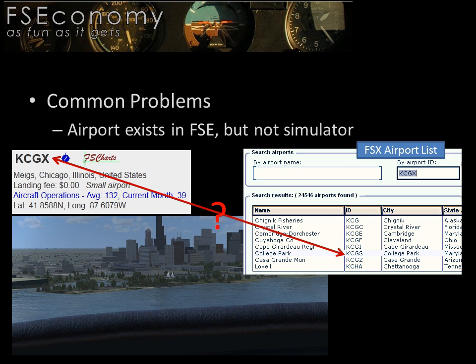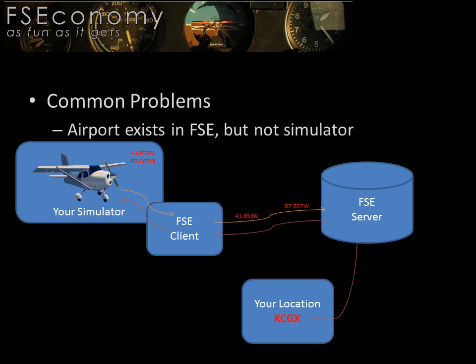For nearly 20 years, Meigs was the default startup location for the Microsoft Flight Simulator series. In 2003, Meigs Field was permanently closed down. The result is that FSX and X-Plane users do not have this field in their simulator by default. So how do these users take jobs to or from KCGX? Simple: either install downloadable scenery to enable an airfield at this location, or land or take off anywhere in the immediate vicinity. Obviously a float plane might be best suited for this, but without realism settings, anything is possible. Your simulator will send your coordinates to the client, who will pass them off to the server. The server will interpret your location as KCGX. Problem solved.